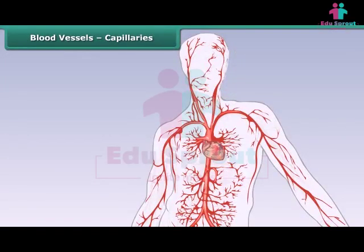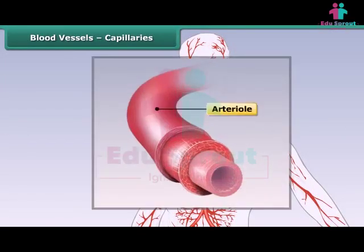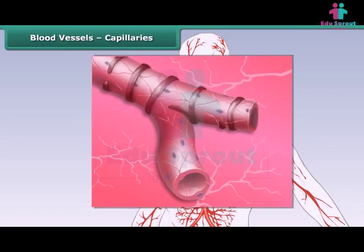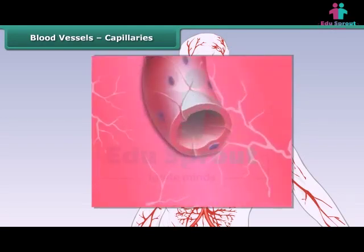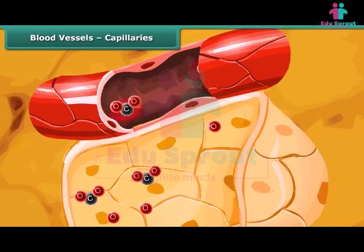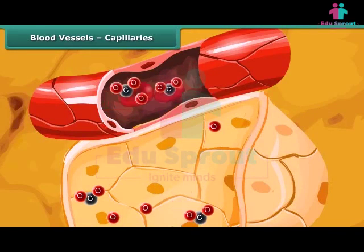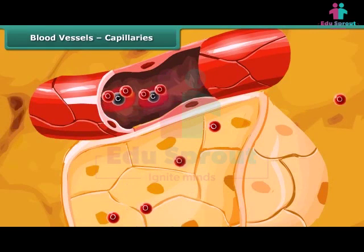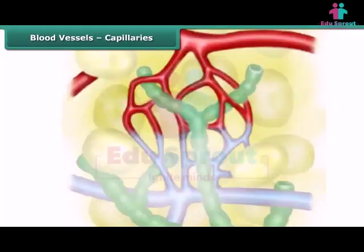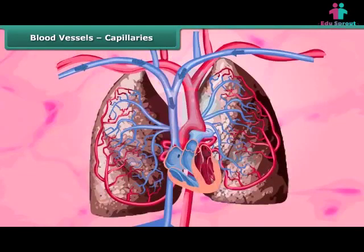Arteries branch into smaller blood vessels called arterioles, which further branch into capillaries. Capillaries are extremely thin blood vessels embedded in the tissues. They carry oxygenated blood from the arteries to the tissues, where oxygen in the RBCs and waste from the tissues are exchanged through the capillary walls. The capillaries carrying deoxygenated blood join to form venules, which in turn join to form veins that carry the deoxygenated blood back to the heart.